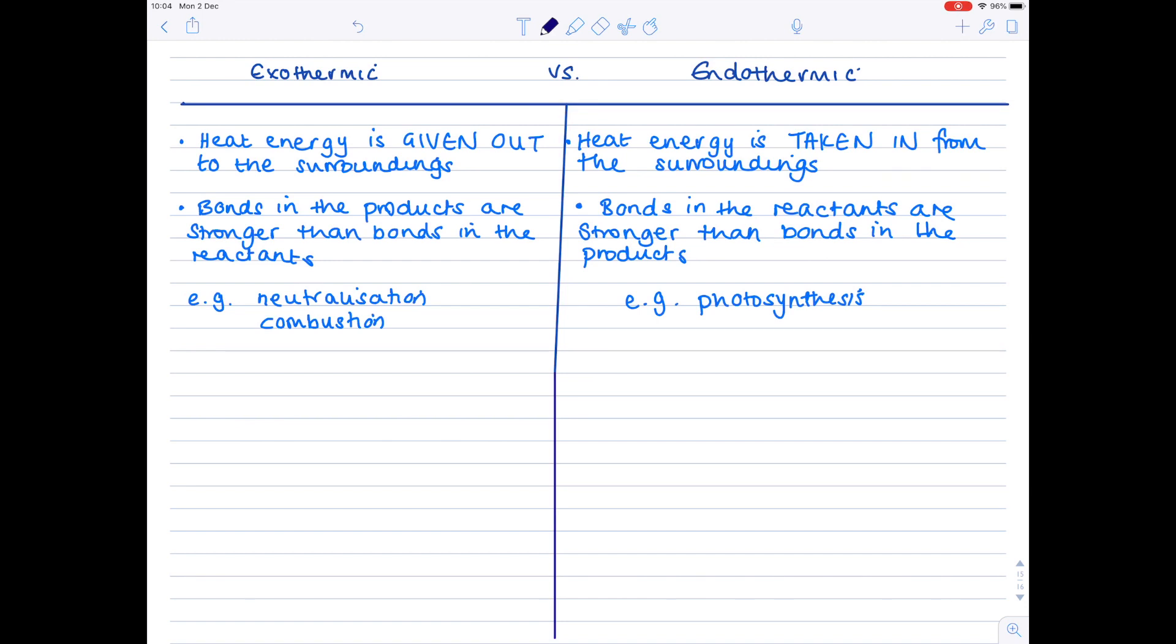Now the last thing you need to be able to do is aside from defining enthalpy, endothermic, exothermic, being able to understand if a reaction is endothermic or exothermic, you need to be able to draw and understand an enthalpy diagram and I promise they're not as complicated as they sound. Now I'm just going to quickly label that an exothermic reaction has an enthalpy change which is negative and an endothermic reaction has a delta H which is positive.